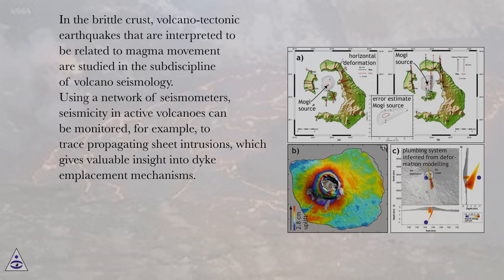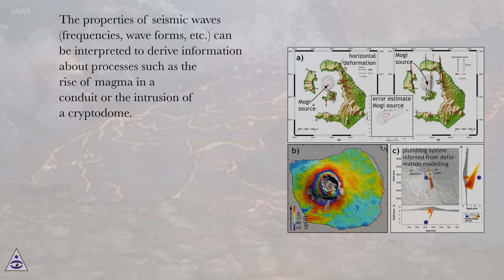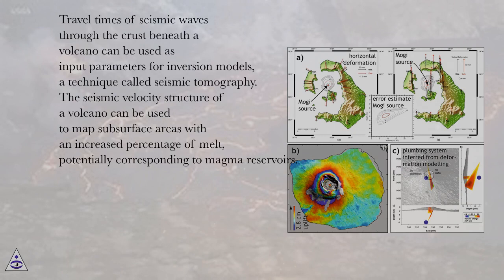The properties of seismic waves — frequencies, wave forms, etc. — can be interpreted to derive information about processes such as the rise of magma in a conduit or the intrusion of a cryptodome. Travel times of seismic waves through the crust beneath a volcano can be used as input parameters for inversion models, a technique called seismic tomography. The seismic velocity structure of a volcano can be used to map subsurface areas with an increased percentage of melt, potentially corresponding to magma reservoirs.